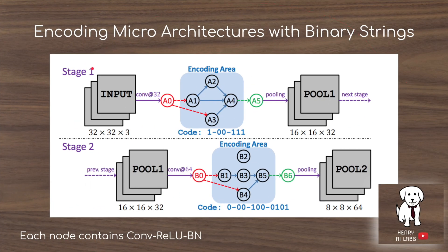The high-level idea of Genetic CNN is to encode the microarchitectures — these microstructures within the convolutional neural network — through binary strings. In this example, the encoding for A1, A2, A3, and A4 is given with this code. A1 is always connected to the input, and A2 is encoded by a bit where 1 indicates that A1 should connect to A2. A3 has encoding 0,0 so no inputs, but a default is used, and A4 uses the output from A3 with a 1,1,1 connection.